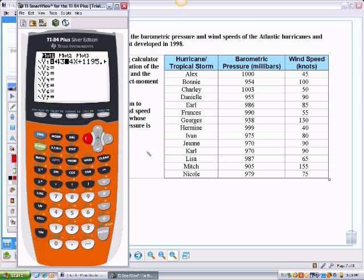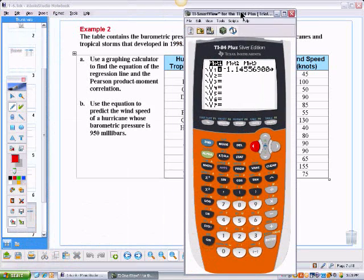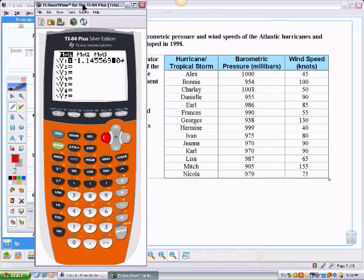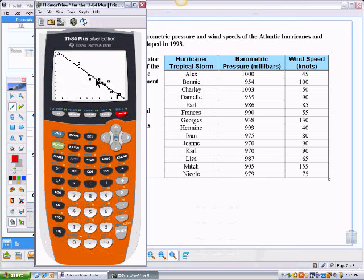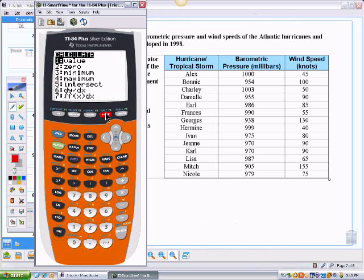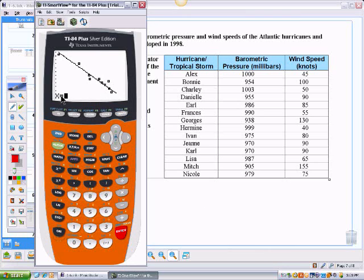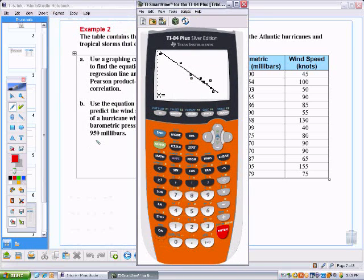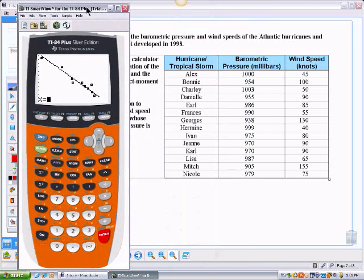The last thing we're being asked for is to approximate what we would have with 950 millibars of pressure. So to calculate like that, let me go back to my graph. We don't have a point on the graph for that value. So what I'm going to do is I'll go second, calculate. And I want to calculate a value. That's choice one. So press enter. And that's what my x value is. My x value is 950. So I'm going to put that in there, 950. And I'll press enter. And it tells me that the wind speed would be 107.6 knots.